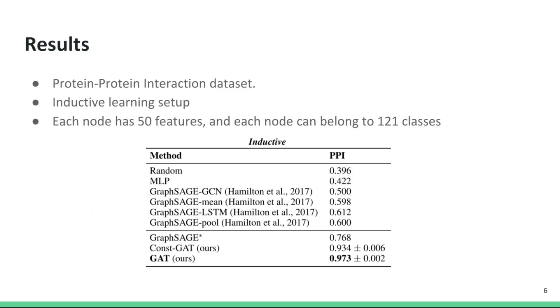Let's take a look at how the graph attention operator performs when compared with other methods at the time of its publication. The table here shows the F1 score of different classifiers for a protein-protein interaction dataset in an inductive node classification setting. Each node has 50 features, and each node can belong to up to 121 classes. We first see here that all methods that use the graph data structure outperform a multi-layer perceptron that operates on a single node individually.